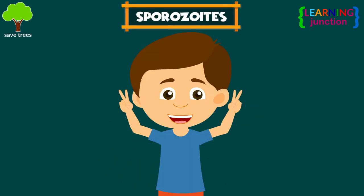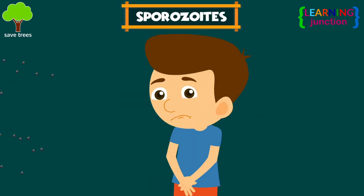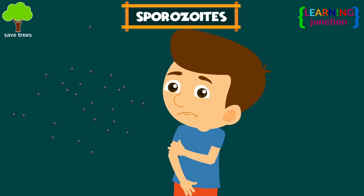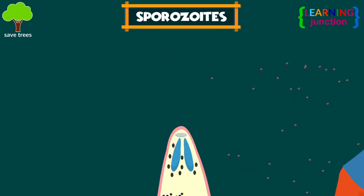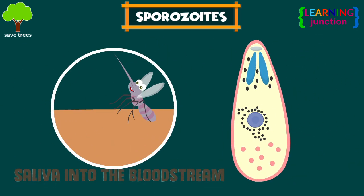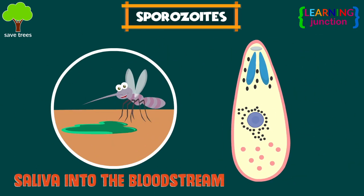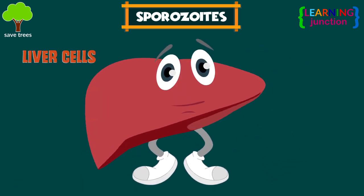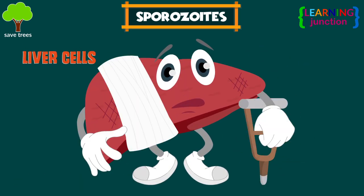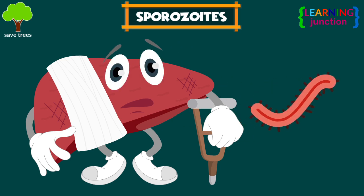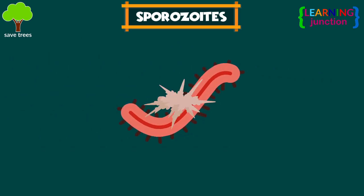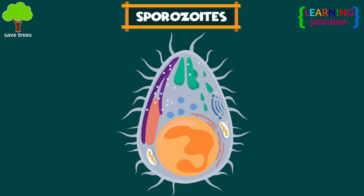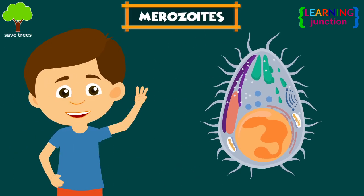Stage 2 — Sporozoites. When the infected mosquito feeds on humans, the sporozoites are carried through the saliva into the bloodstream. After this, the sporozoites enter the liver cells and develop into ring-shaped schizonts. Later, these schizonts rupture and release the merozoites.